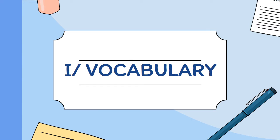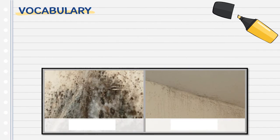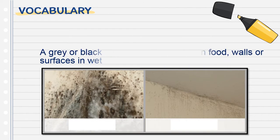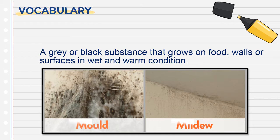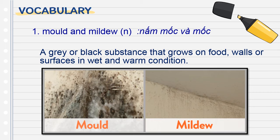The first part of our lesson is vocabulary. You will have pictures and hints to guess the first word. A gray or black substance that grows on surfaces in wet and warm conditions — it means chất màu xám hoặc đen trên tường hoặc bề mặt trong điều kiện ẩm ướt. The answer is mold and mildew — nấm mốc và mốc.